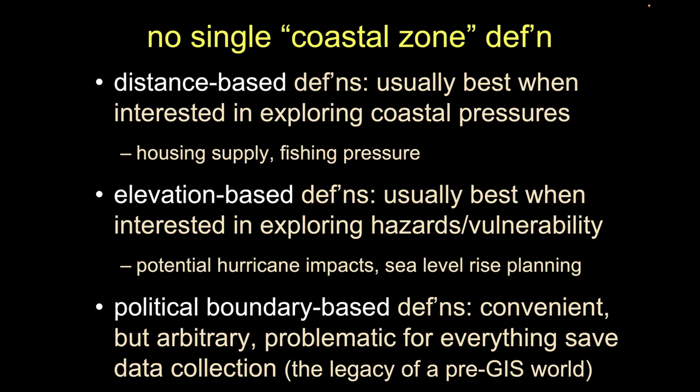So once we have our mean higher high water line drawn on a map, we can start to do some calculations. Because most of our definitions of the coastal zone are about distances on a two-dimensional thing, now we have a line and can measure things from it. Distance-based definitions are often about dealing with pressures and stressors — for example, housing supply, or how many fishing vessels are concentrated close to the shore, like those squid fishermen off Malibu. Those would be distance-based measures.